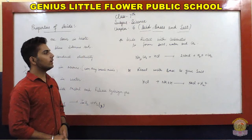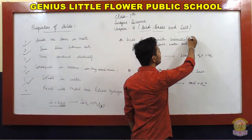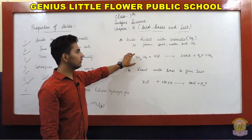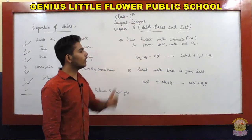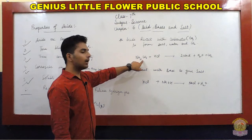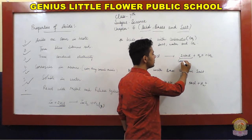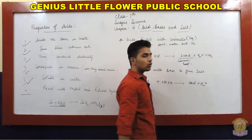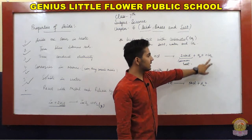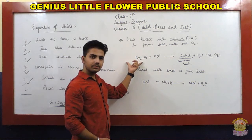The seventh property is: acid reacts with carbonates to give salt, water, and CO2. Carbonates are compounds containing CO3. When any acid reacts with a metal carbonate, it always gives salt, water, and carbon dioxide gas. Go through the examples in your book to see these reactions.